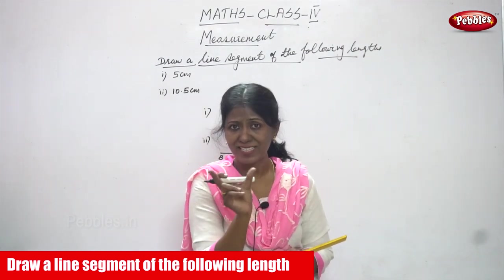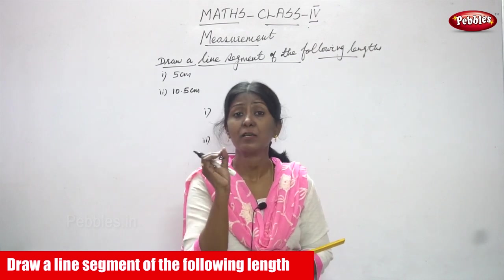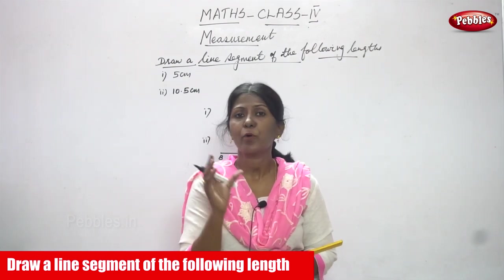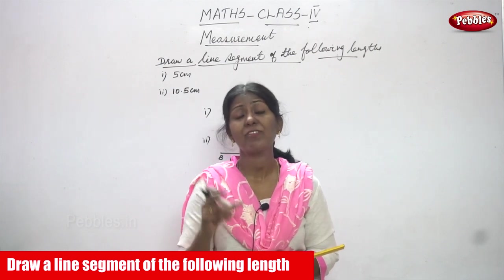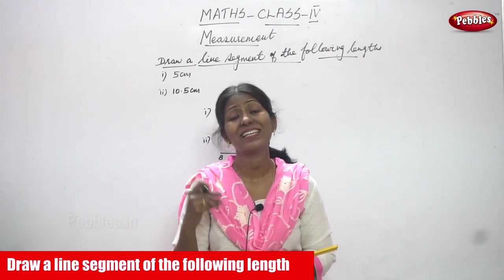For example, 5 means it is a 5 cm line segment. It is a specific measurement is given. 10.5 cm is a specific measurement is given. 20 cm is a specific measurement is given. This is called as a line segment.